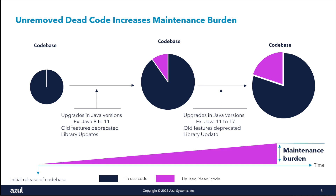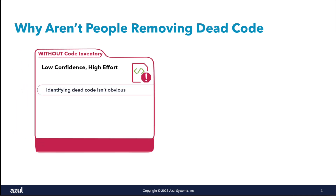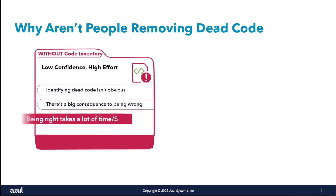A couple years later, different people rotate in and out of the team. Maybe you're the new manager of it. You'll find that this dead code tends to grow, because we don't go through to actually remove it. We might remove all references to some lines of code, but when it comes to cleaning up dead code, most developers don't actually go through and remove it — they just kind of leave it there.